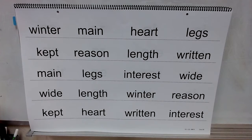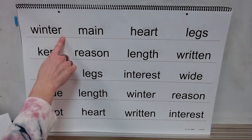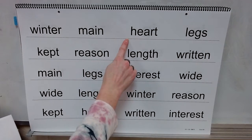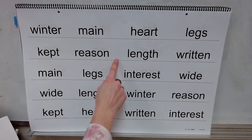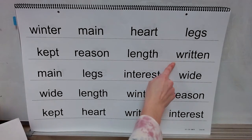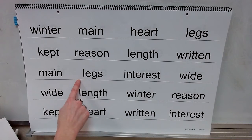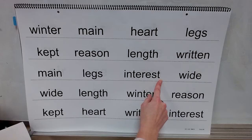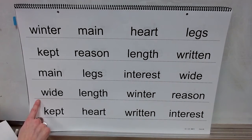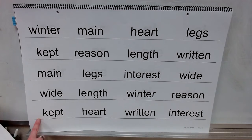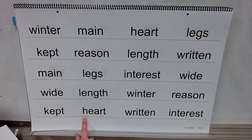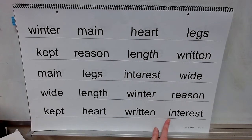This is Grade 3, Unit 6, Lesson 26, Day 3. You're going to start out by reading some high frequency words. Word: winter. Word: main. Word: heart. Word: legs. Word: kept. Word: reason. Word: length. Word: written. Word: main. Word: legs. Word: interest. Word: wide. Word: length. Word: winter. Word: reason. Word: kept. Word: heart. Word: written. Word: interest.